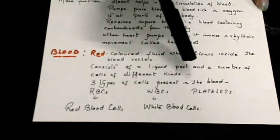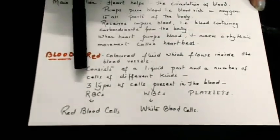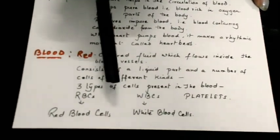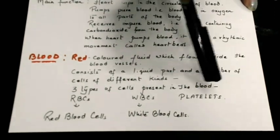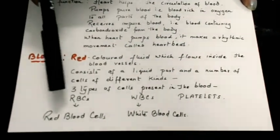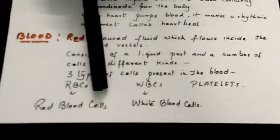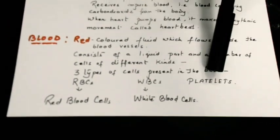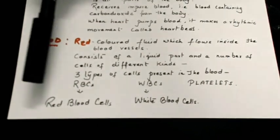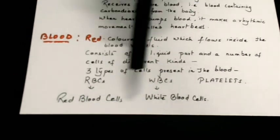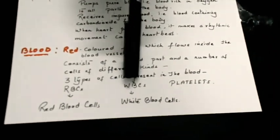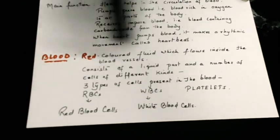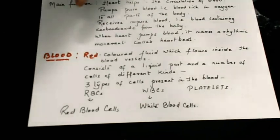Blood consists of a liquid part and a number of cells of different kinds. These three types of cells present in blood are called red blood cells, white blood cells, and platelets — RBCs, WBCs, and platelets.